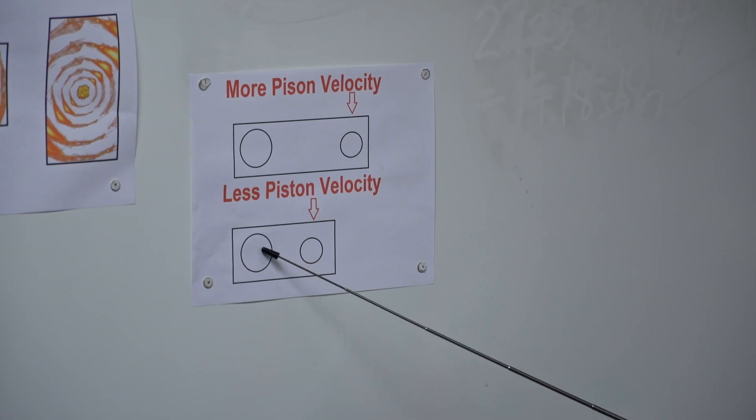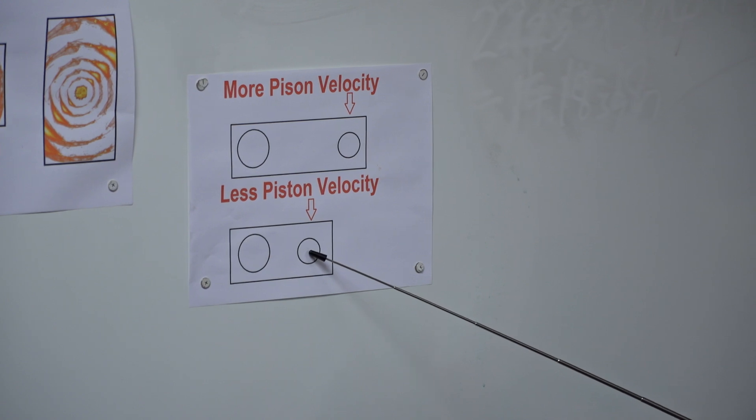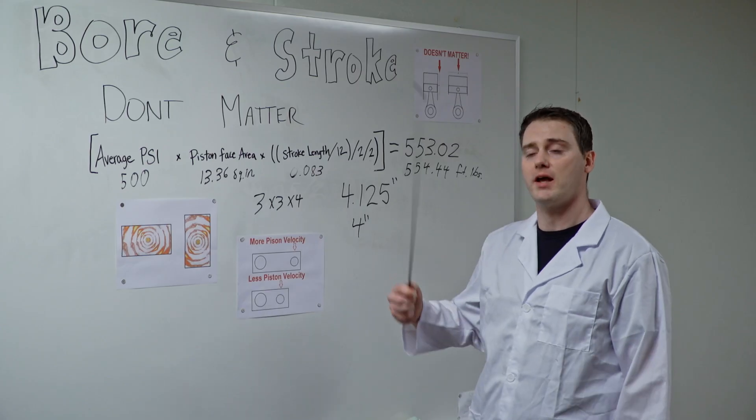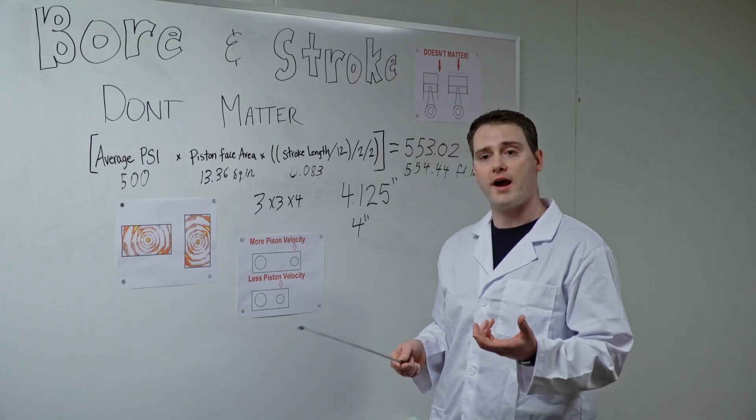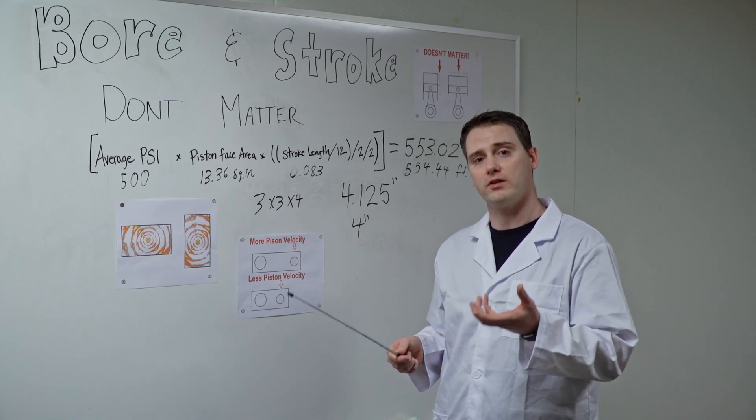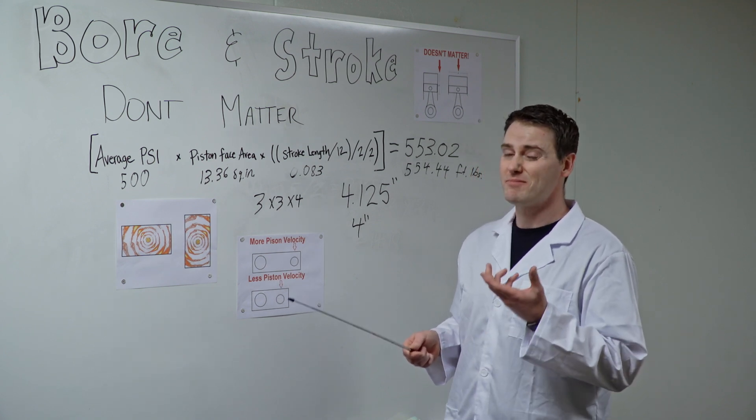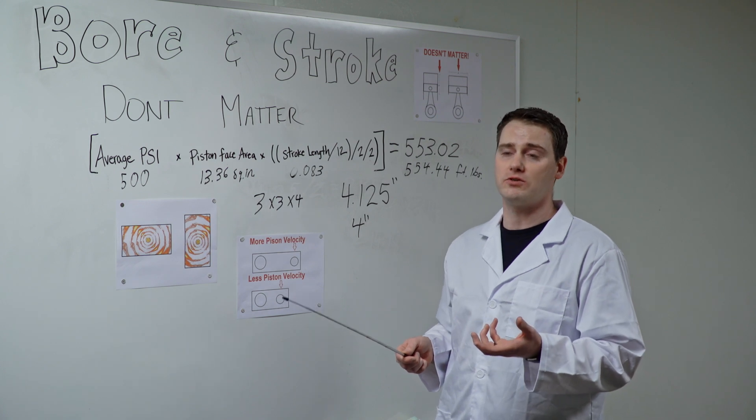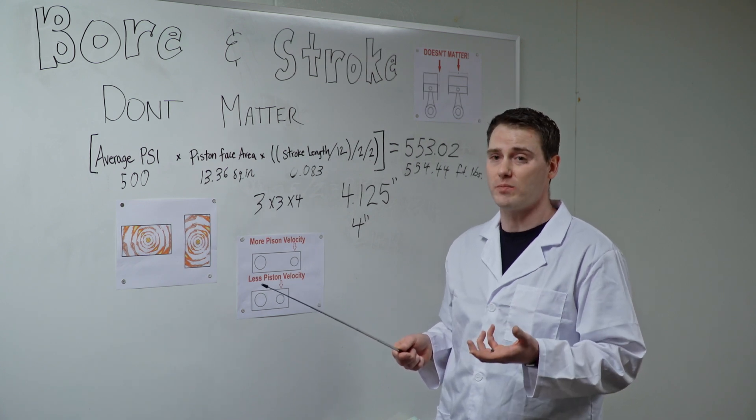The other thing that the short stroke does is it means that the piston has more dwell time at the top and at the bottom. So at really high RPMs, that can help to fill the cylinder more completely full of an atomized mixture. But that really only has an effect when you start getting above like 7,000 RPMs. It's just not something you're going to see very often on a street motor.